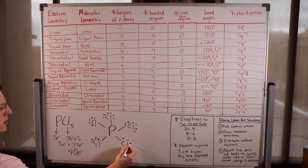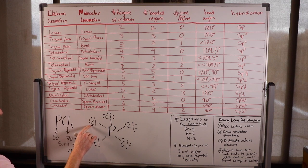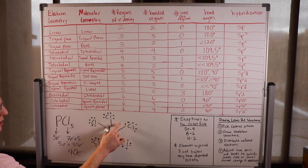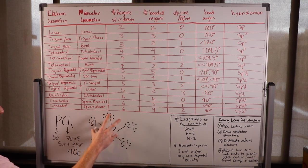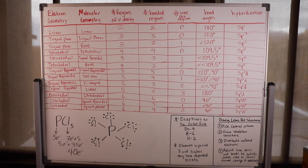So let's see how many that used. We had 30 to use for the lone pairs — 6 times 5 chlorines — we just used 30 electrons, so we're out of electrons.